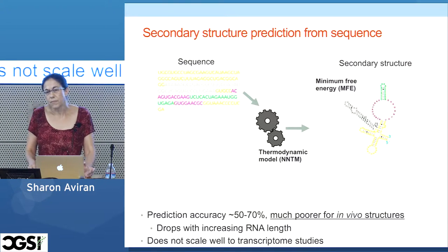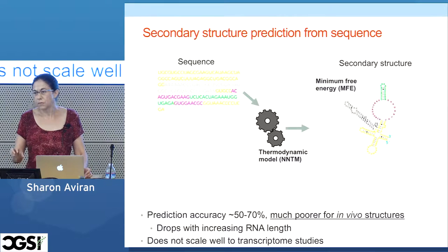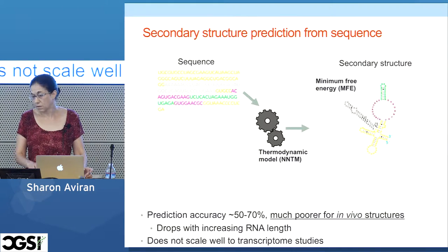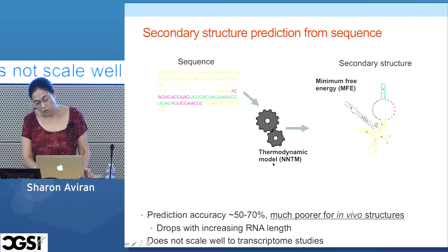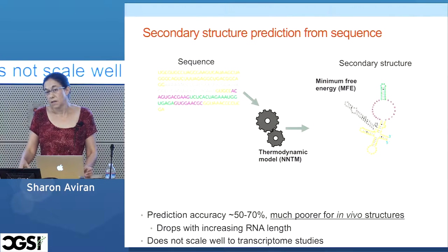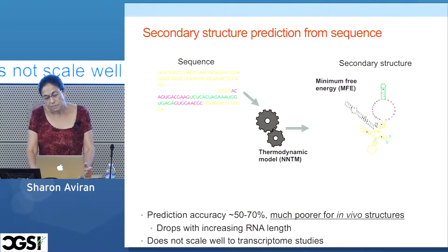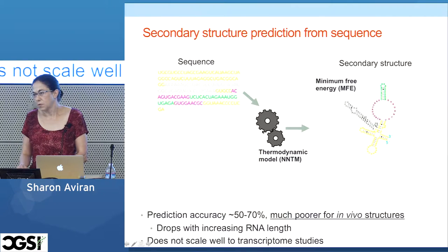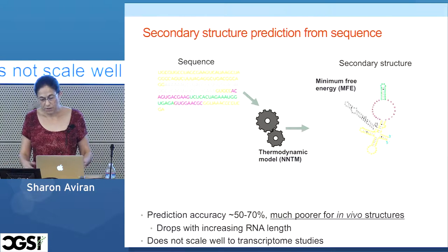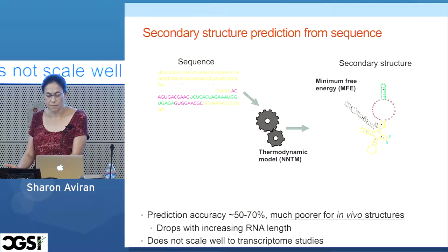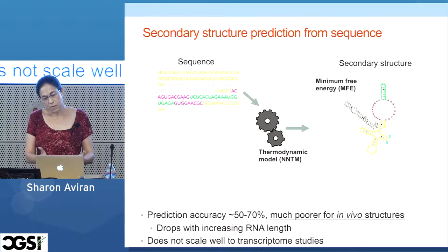Today, most importantly, these algorithms don't seem very suitable for predicting structure in vivo, which has become very relevant in recent years. They are based on the nearest neighbor thermodynamic model, made from many measurements done in vitro outside the cell environment. People don't believe these measurements are really applicable to what's happening in the cell, in terms of the environment itself, protein interactions, RNA interactions, and so on. Once we become interested in in vivo structures, this framework becomes less and less relevant.